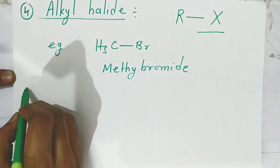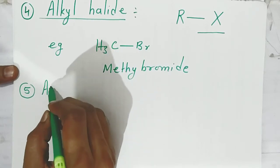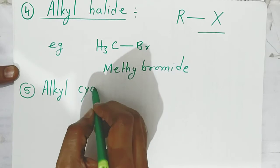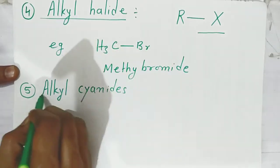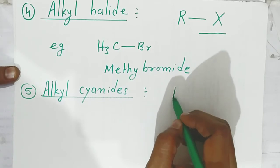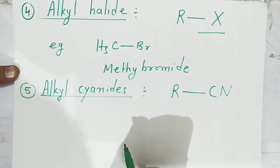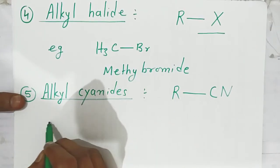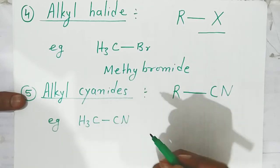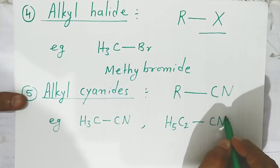The fifth functional group is alkyl cyanide. Alkyl cyanide is formed when the hydrogen of the alkane is replaced by a cyanide group (–CN). This is called alkyl cyanide. Examples include methyl cyanide (CH3CN) and ethyl cyanide (C2H5CN).